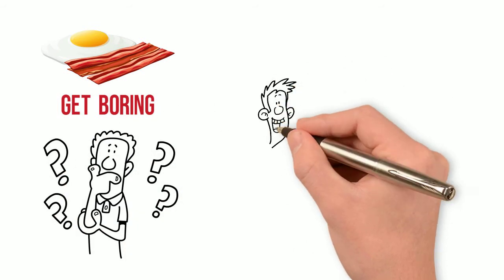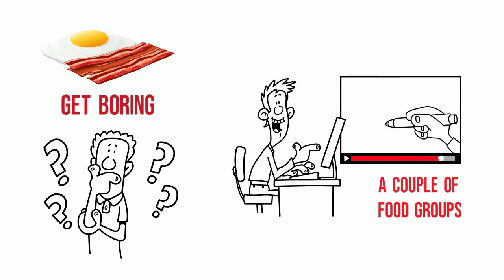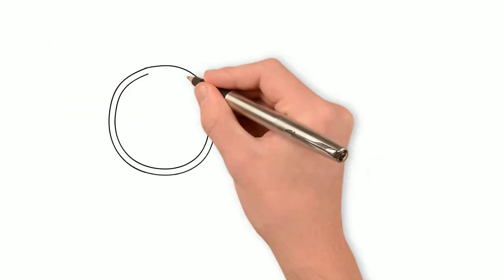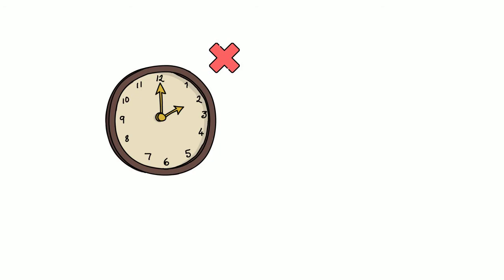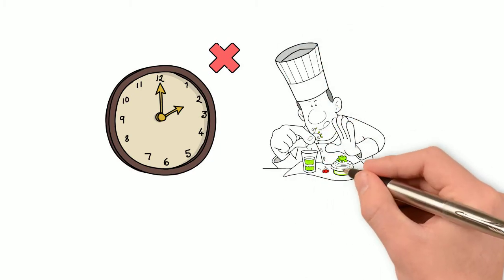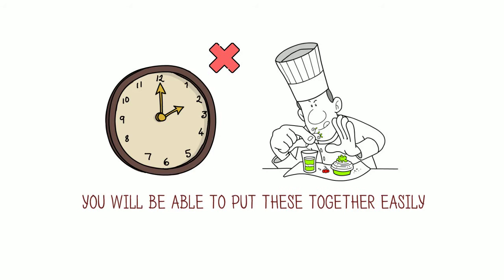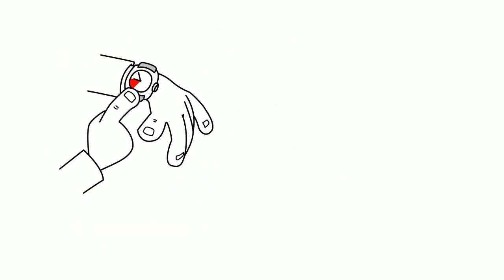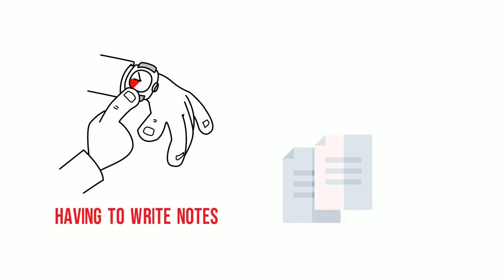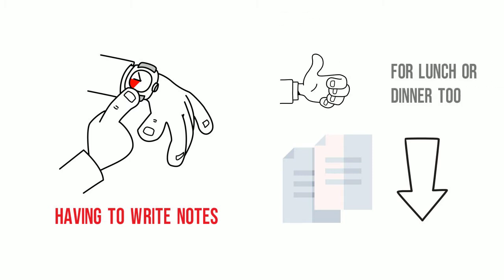The problem with a keto breakfast is that they can get boring if you do not think outside of the box. So the aim of this video is to look at variety around a couple of food groups. We're not going to take up a lot of your time showing you how to prepare them in the kitchen, as we know you'll be able to put these together easily yourself. So that we do not take up a lot of your time, you may cut and paste all of the ideas from the description below. They work equally well for lunch and dinners too.